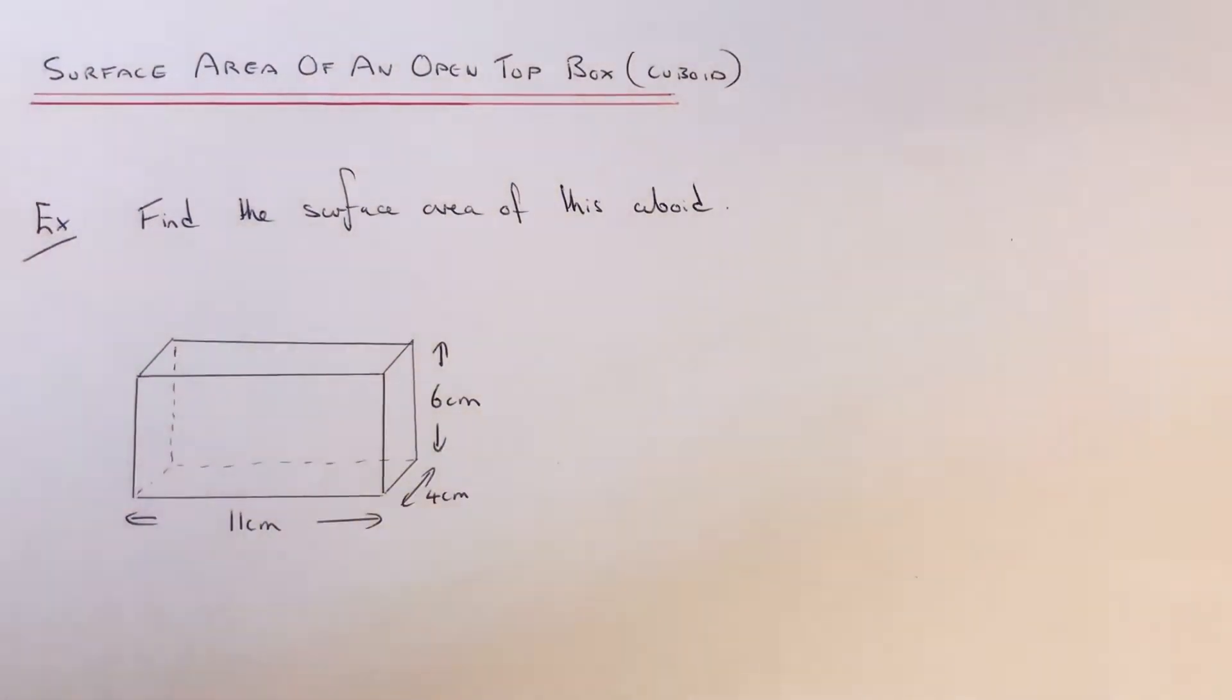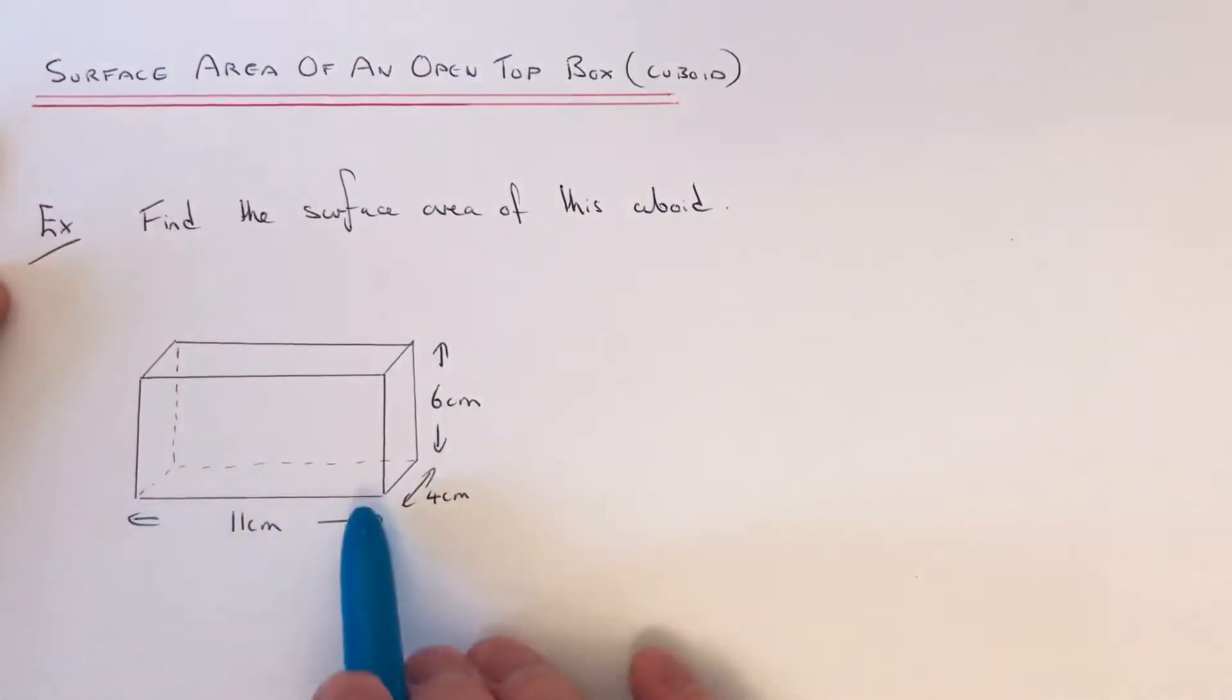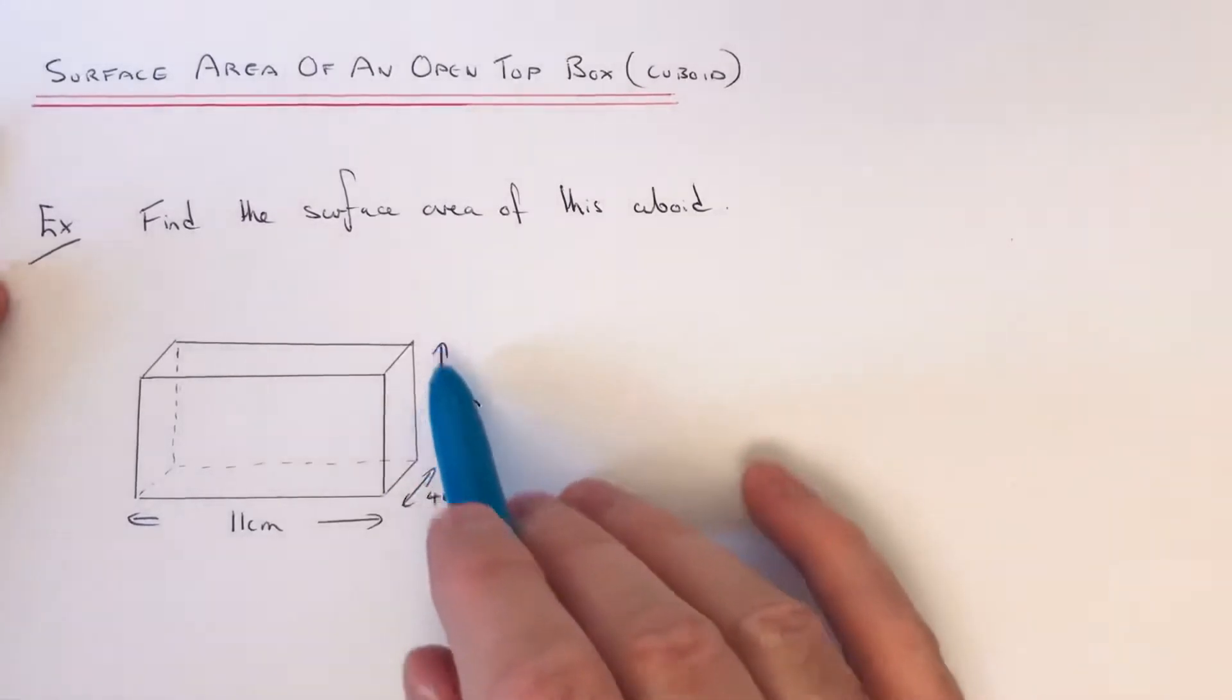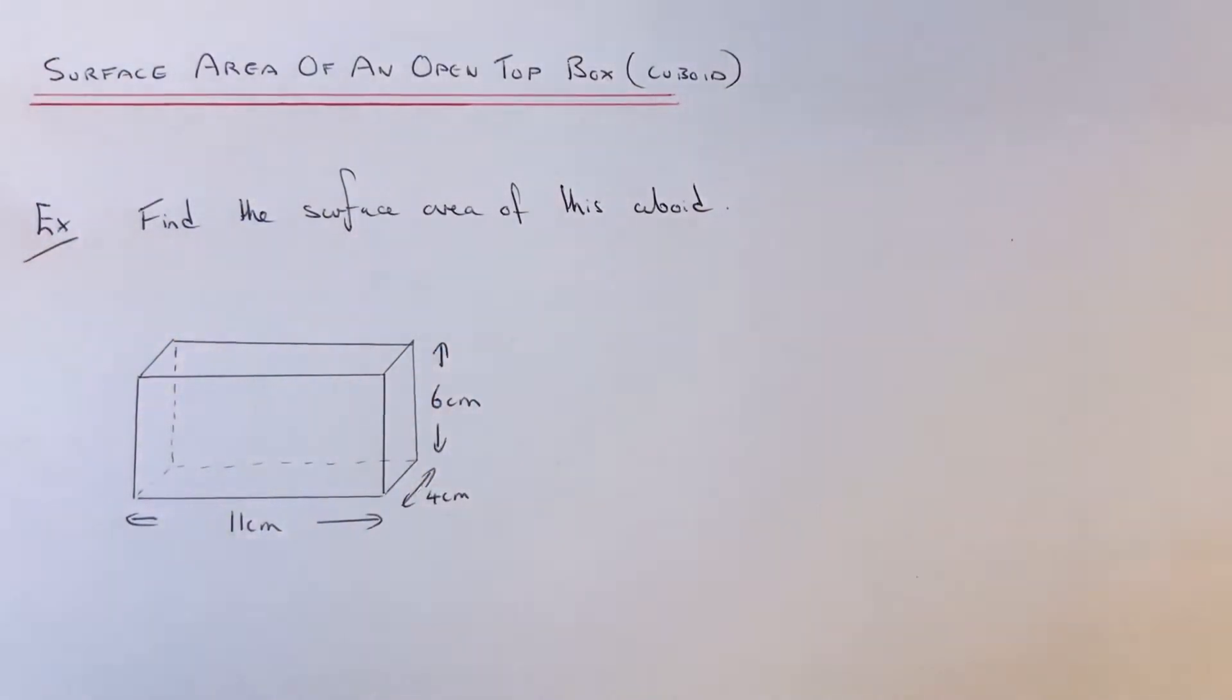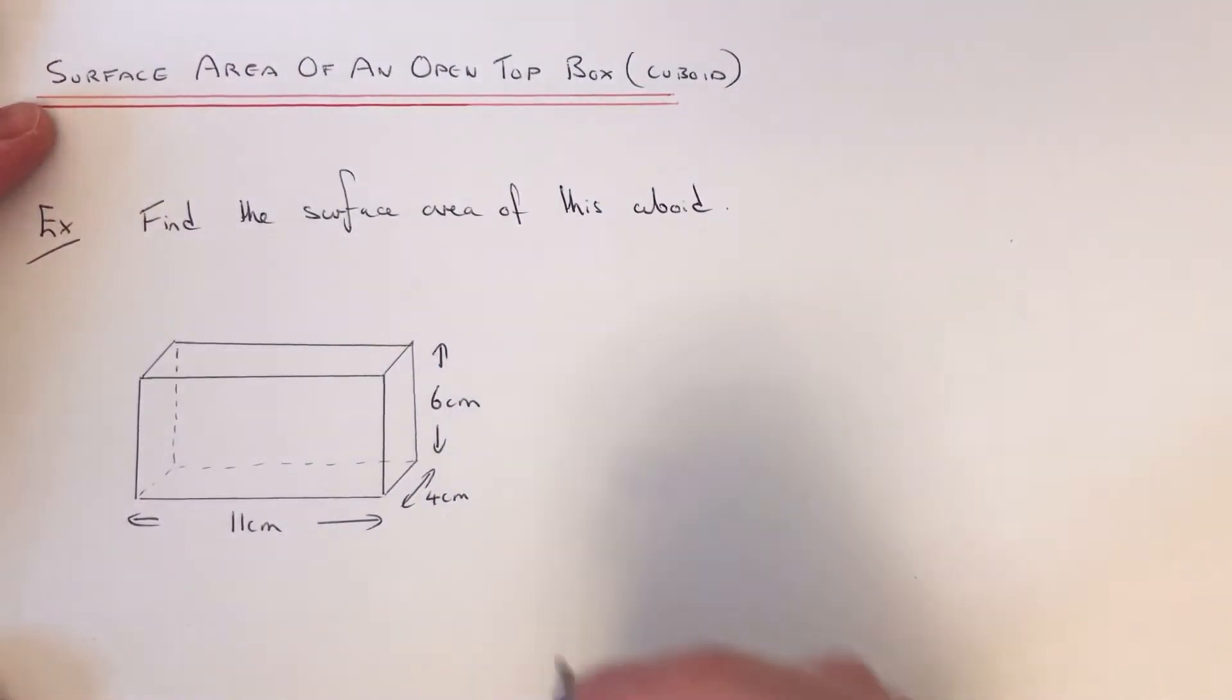So let's have a look at the example here. Our open top box has a length of 11, a width of 4, and a height of 6. So remember what we need to do is work out the area of all five faces and add them together.